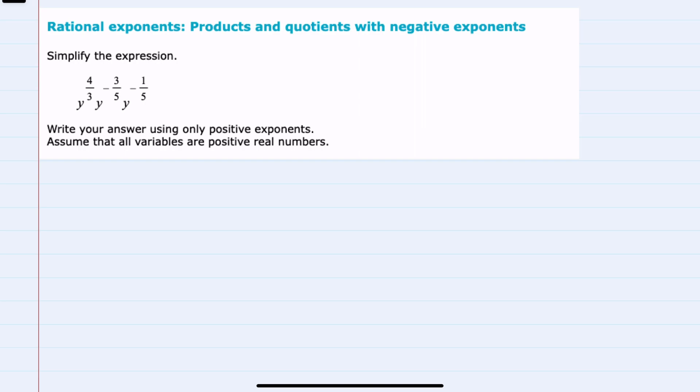We're given this expression to simplify. And for this example, these are products, and our rule for multiplying variables with the same base, the product rule says that we keep that base, and our exponent will be the sum of those individual exponents.